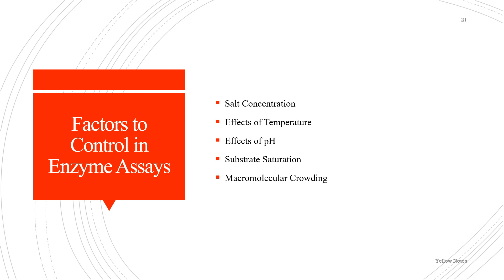The last factor is macromolecular crowding. The phenomenon of macromolecular crowding alters the properties of molecules in a solution when high concentrations of macromolecules such as proteins are present. Crowding occurs because these high concentrations of macromolecules reduce the volume of solvent available for other molecules in the solution, which has the result of increasing their effective concentrations.